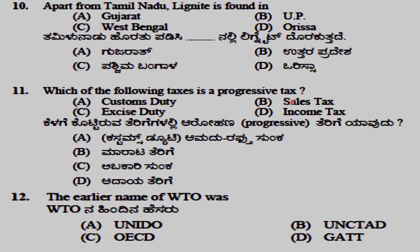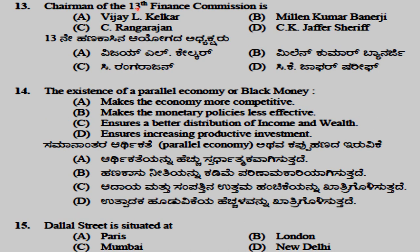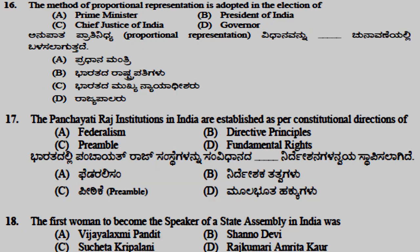Apart from Tamil Nadu, lignite was found in both Gujarat and West Bengal. Among the following taxes, income tax is a progressive tax. The earlier name of WTO was GATT. The chairman of the 13th Finance Commission is Vijay L. Kelkar. The existence of parallel economy or black money makes monetary policy less effective. Dalal Street is situated at Mumbai.